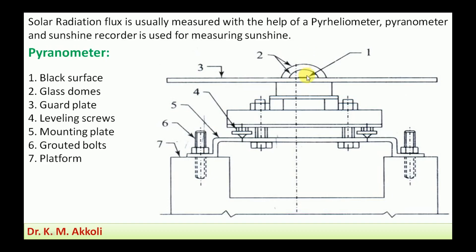If both beam radiation as well as diffuse radiation fall on the instrument, then that is the global radiation we are going to measure. For measuring global radiation, the shading ring is not provided. If measuring only diffuse radiation, a shading ring is provided which shades the black surface — typically a thermopile — so it receives only deflected radiation, not direct radiation.